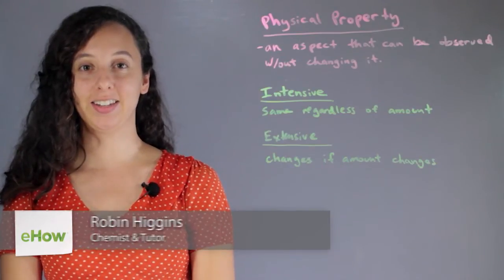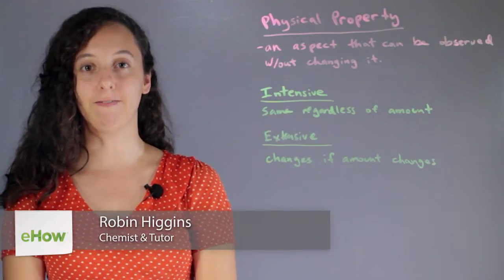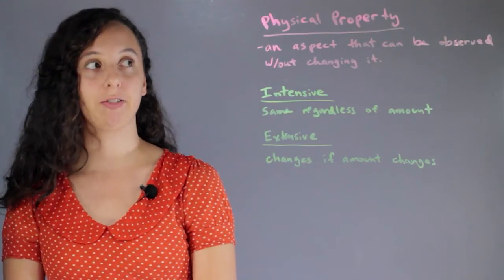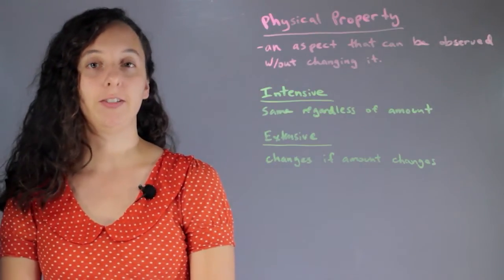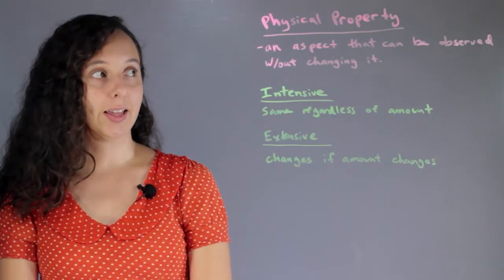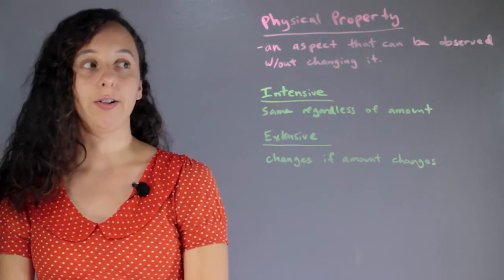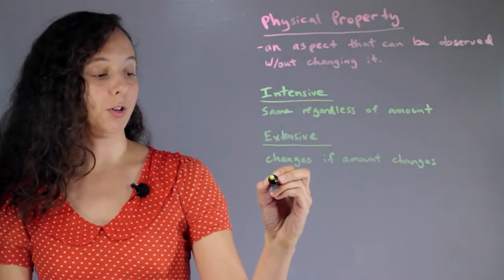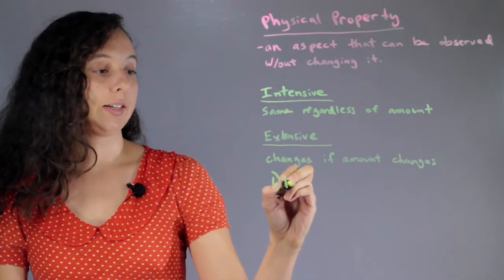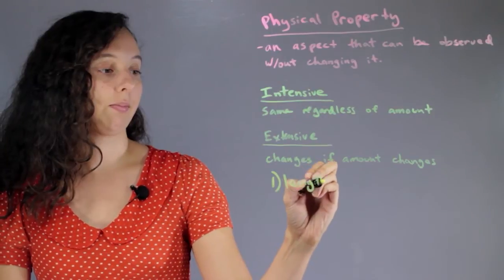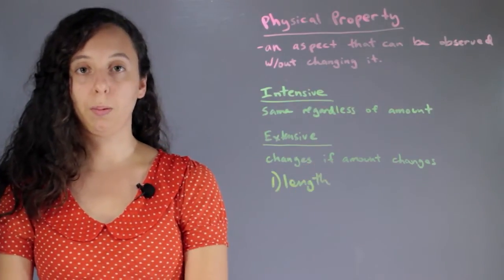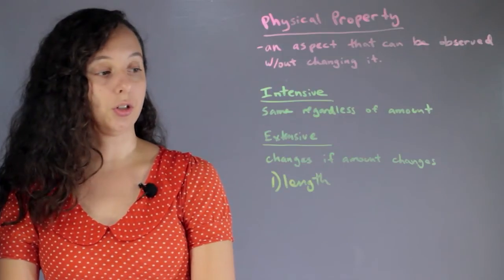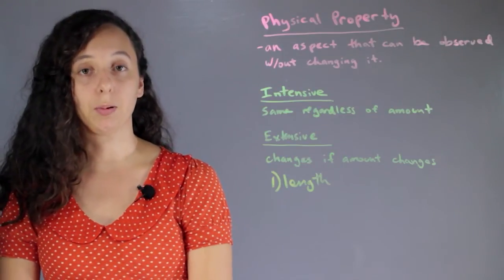Hi, I'm Robin Higgins, and this is 10 Examples of Physical Properties in Chemistry. So let's review what a physical property is. A physical property is an aspect that can be observed without changing it. I'll give you example number one: length. You don't need to break anything or change anything if you just want to measure the length — physical property.